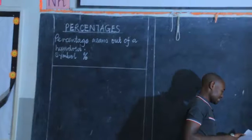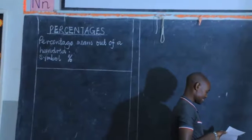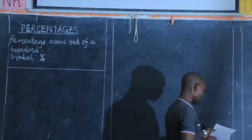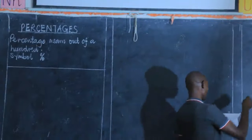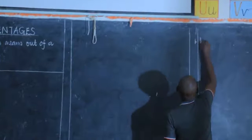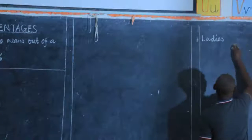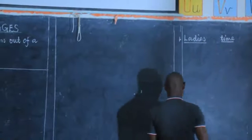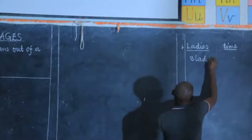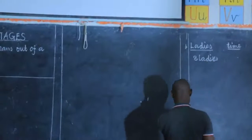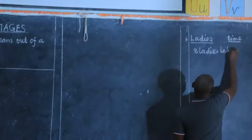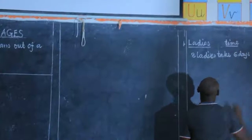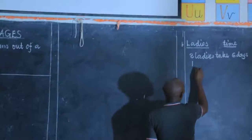Number one says: three ladies can weed a garden in six days. How long will nine ladies take to weed the same garden? So in this case, we are looking for the time. We shall have ladies on one side and time on the other side. So three ladies take six days to weed this garden. But what about when it is one lady?